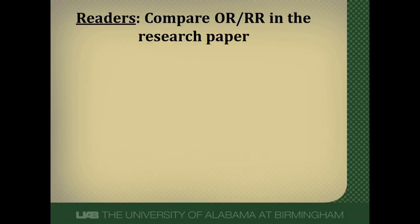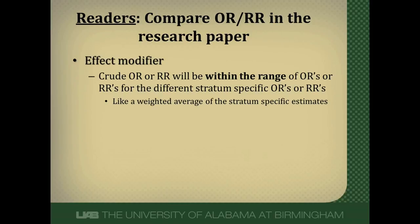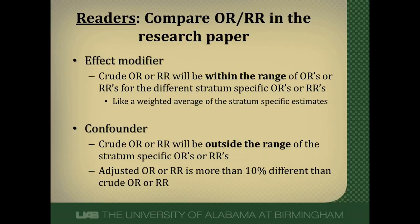For readers of research papers, you won't be doing these analyses yourself, but you'll need to examine tables and data presented in the study. A variable is an effect modifier if the crude measure of effect — the odds ratio or relative risk — falls within the range of all the stratum-specific odds ratios or relative risks, appearing like an average of them. A confounder, on the other hand, will have a crude odds ratio or relative risk that falls outside the range of the stratum-specific values, and the adjusted odds ratio will differ from the crude by more than 10%. Note that you may need to calculate the crude odds ratio yourself, as it's often not reported in papers.